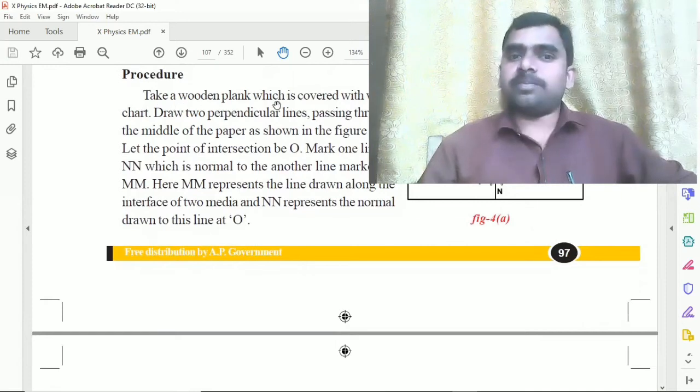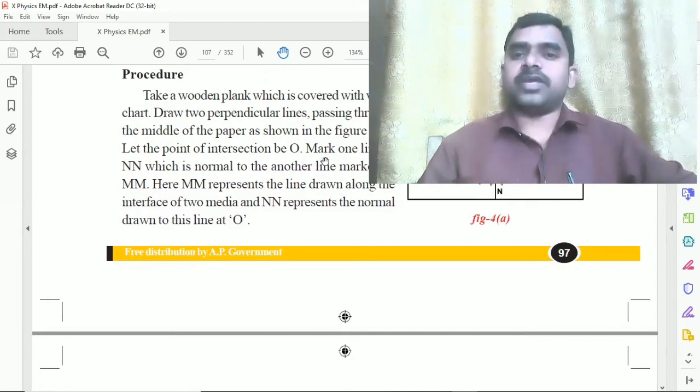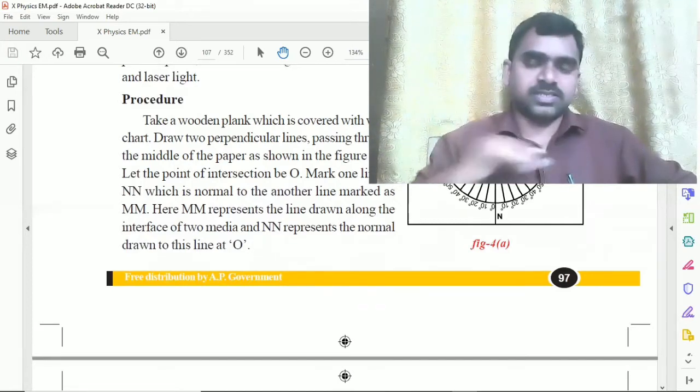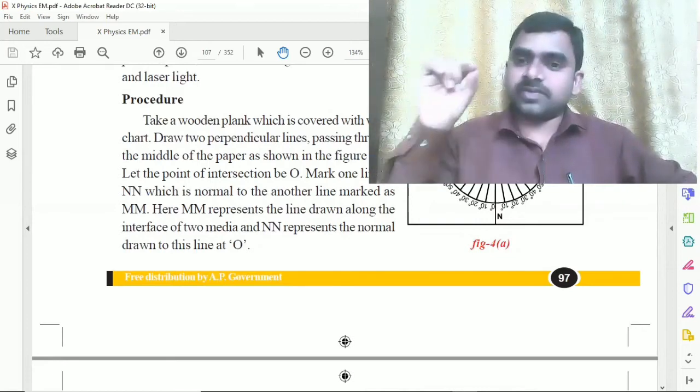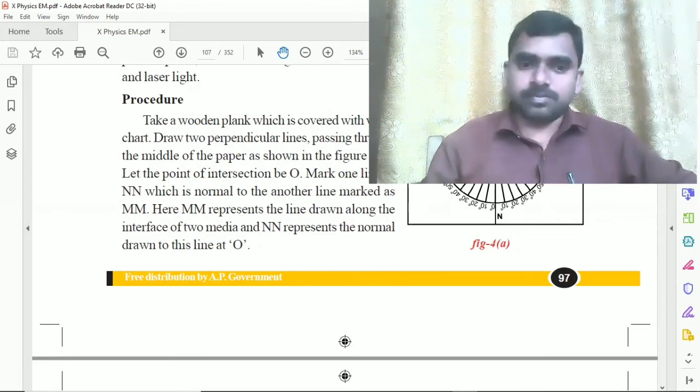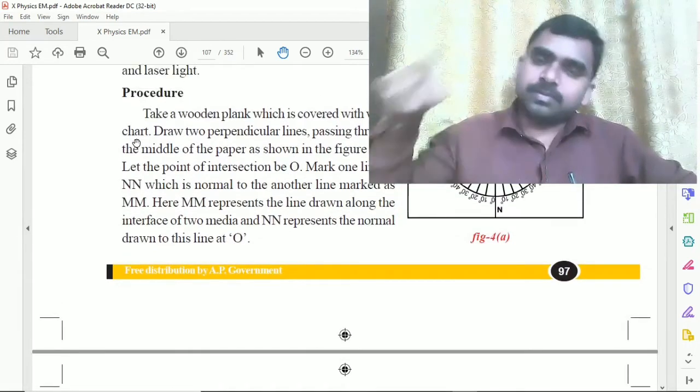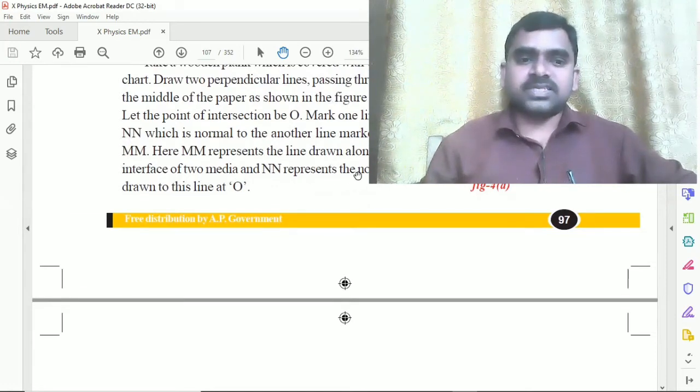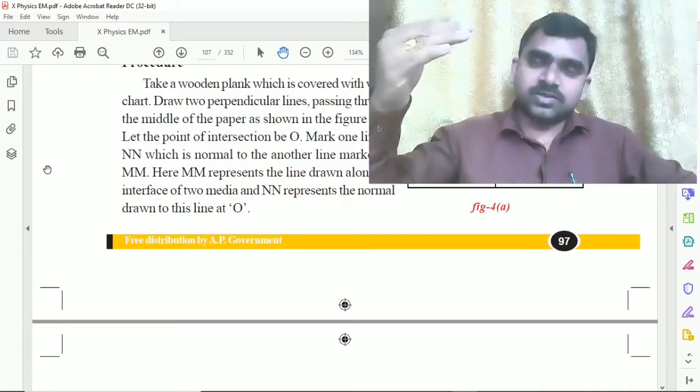Procedure: Take a wooden plank which is covered with white chart. Draw two perpendicular lines passing through the middle of the paper as shown in the figure. The vertical line is NN, which is normal to the other line marked as MM.